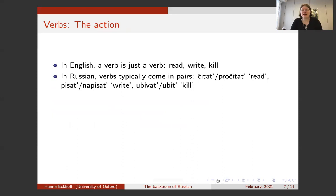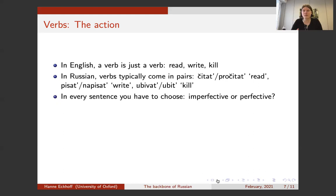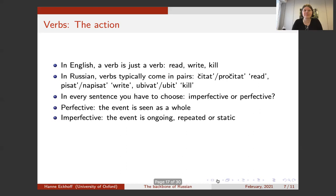Now let's turn to the verbs — the action, not just the participants. In English, verbs are verbs: you have read, write, kill. Whereas in Russian, verbs typically come in pairs — aspectual pairs. Russian verbs have verbal aspect, so instead of one verb 'read,' there are two: 'chitat'' in the imperfective aspect and 'prochitat'' in the perfective. The same for write: 'pisat'' and 'napisat'.' The same for kill: 'ubivat'' and 'ubit'.' In every sentence you have to choose — you have to decide whether your verb is going to be perfective or imperfective.